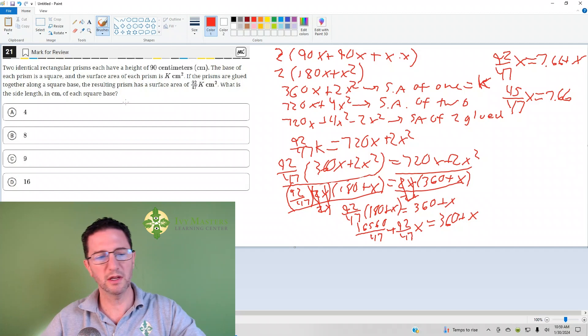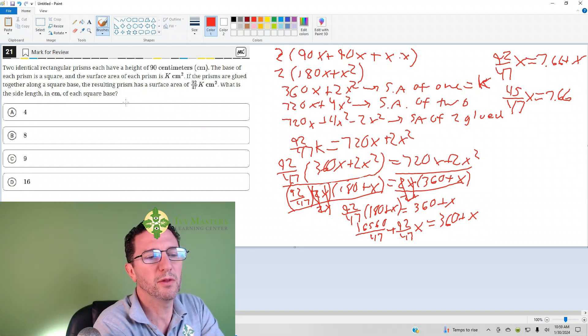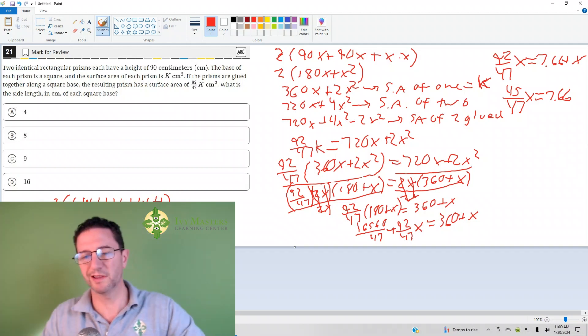So the first thing you have to know is that the formula for surface area is 2 times length times width plus length times height plus width times height. And there's logic behind this, but this is a long problem. So I'm going to cut out the details. Know that formula.